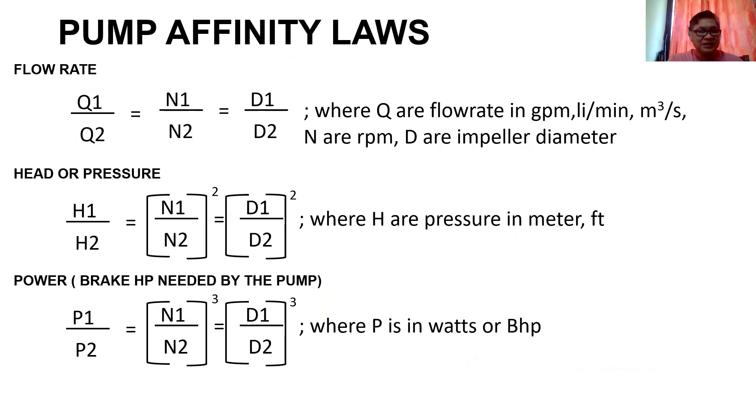The flow rate, the head, and the power of the pumps, fans, and blowers. The flow rate, the ratio of the flow rate Q1 over Q2 is equal to the ratio of the speed N1 over N2 and the diameter of the impeller D1 over D2.